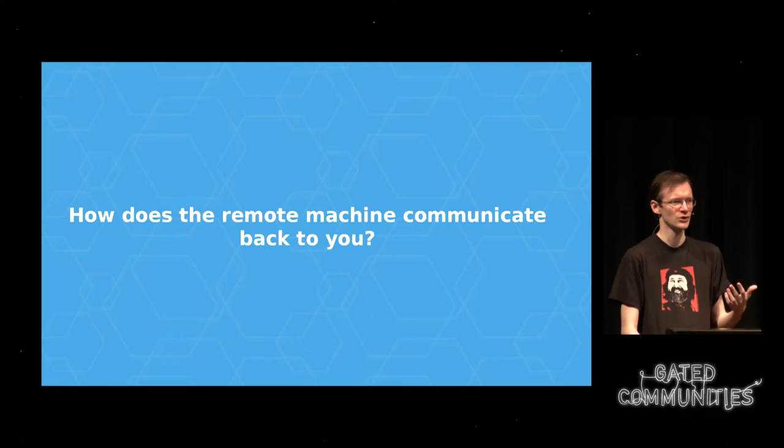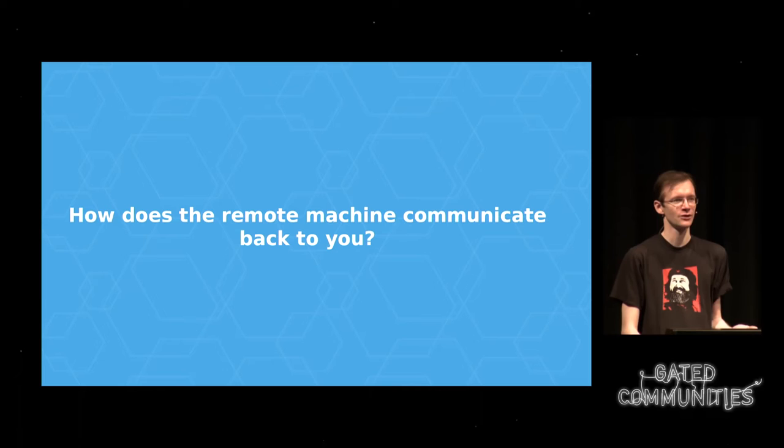How does the remote machine communicate back to you? SMS, maybe, but someone could just send a fake SMS — phone networks are not as secure as we'd like, especially if your adversary is a government. Over some sort of secure connection on your local system, you'd open a browser, but the browser could be compromised by the kernel. Remote attestation is a problem because it relies on you trusting a large number of systems that aren't in your control, and that's not the kind of situation we want.